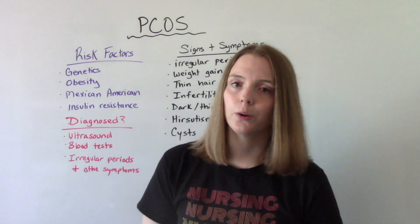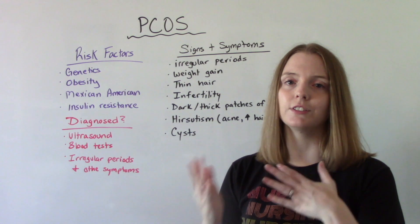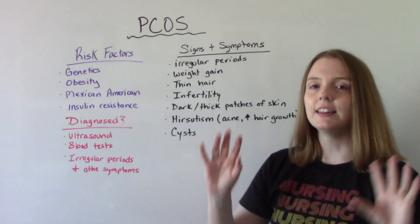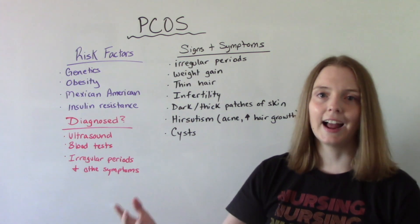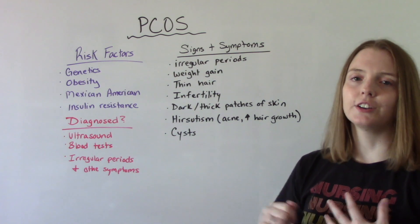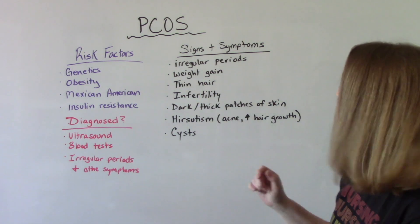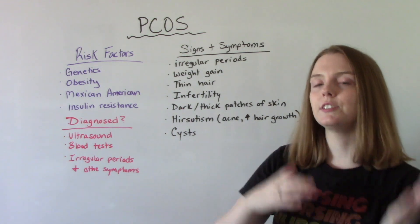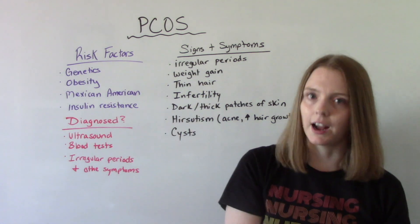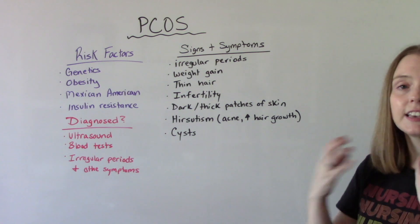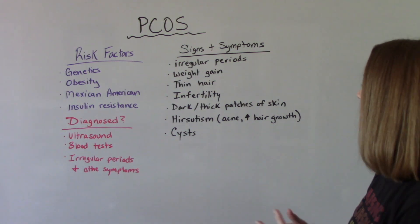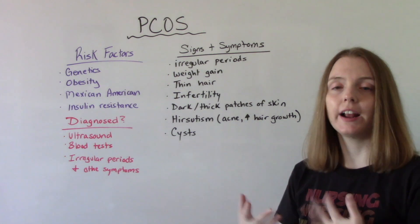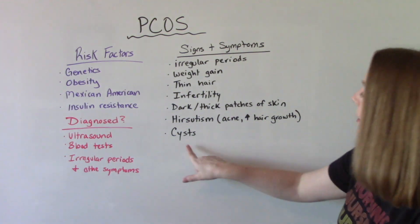Some symptoms your patient might present with — they might have all of these or just some, in various levels of severity. Things like irregular periods, defined as less than 9 periods a year. Weight gain or having a harder time losing weight. Thinning of the hair. Infertility — though not everybody with PCOS is infertile. Dark thick patches of skin on the body. Hirsutism, characterized by acne and excessive hair growth — like more facial hair or hair on arms and legs. And of course, those ovarian cysts.